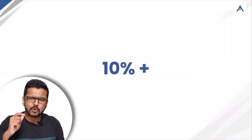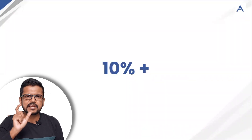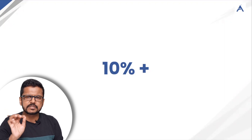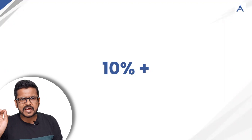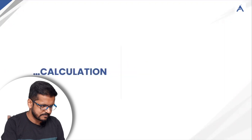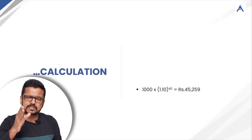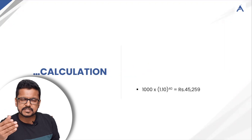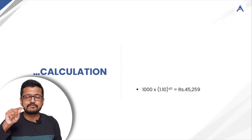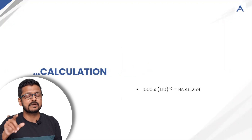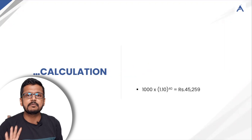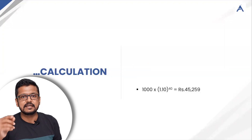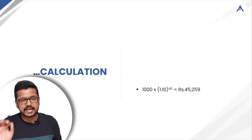When something grows by 50 times in 40 years, the inflation or rate of growth is more than 10% compounded annually. If your expenses were 1,000 rupees per month and grew by 10% per annum for 40 years, it becomes 45,000 rupees per month today. And we are talking about a minimum of 50,000. So your inflation over the last 40 years is at least 10% per annum.